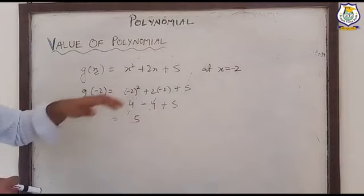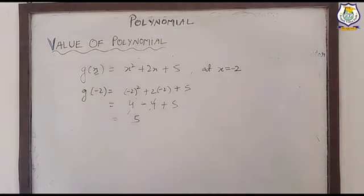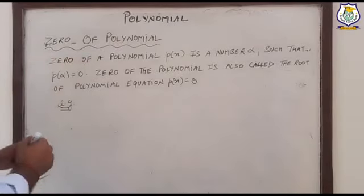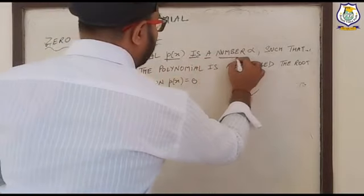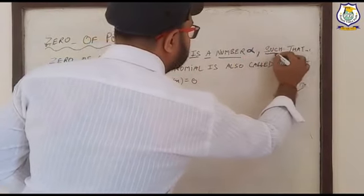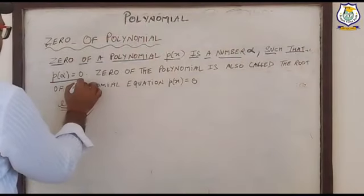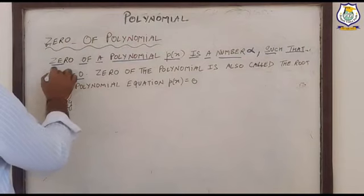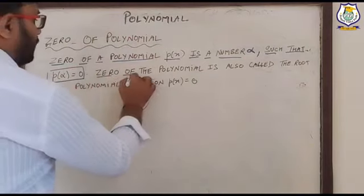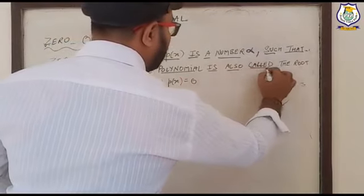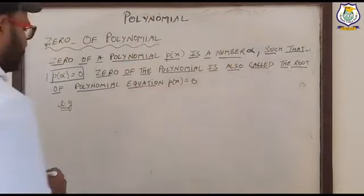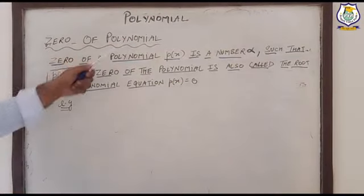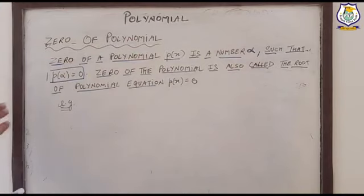So five is the value of this polynomial. Now, the zero of a polynomial: the zero of a polynomial p(x) is a number alpha such that p(alpha) equals zero. The zero of the polynomial is also called the root of the polynomial equation p(x) equal to zero.